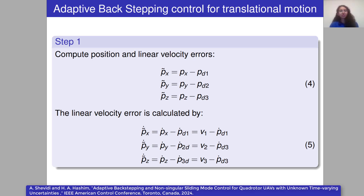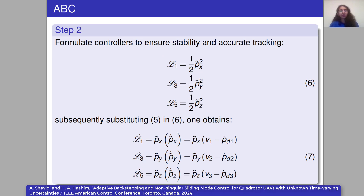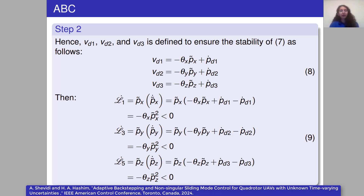The first step is to design adaptive back-stepping control for translational motion. Back-stepping is a well-known method to address the underactuation issue, and adaptive back-stepping control can also handle uncertainty. The first step is to compute position and linear velocity errors. We then formulate the controllers to ensure stability and accurate tracking. The Lyapunov function can be defined by this equation. We define the desired linear velocity using the back-stepping approach.